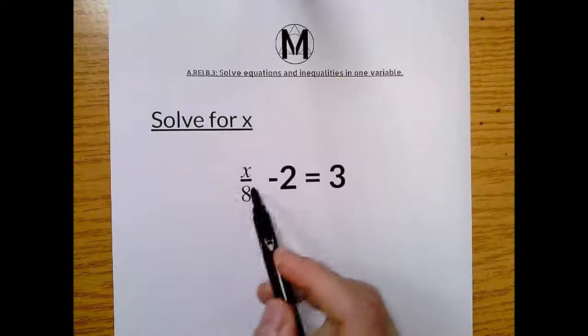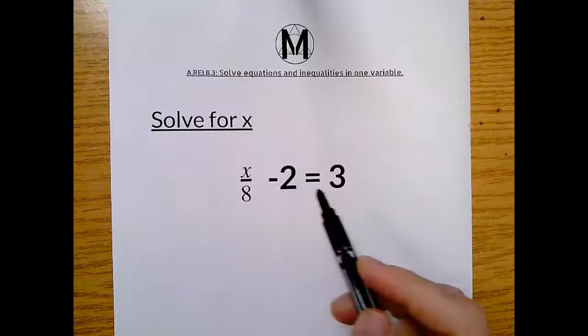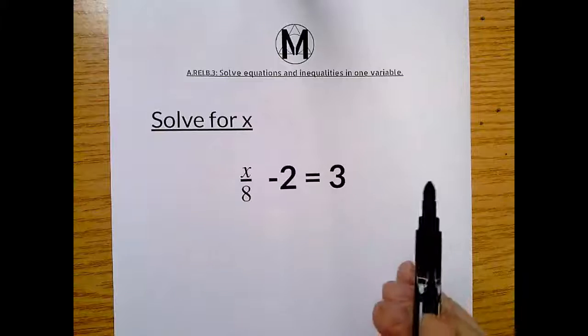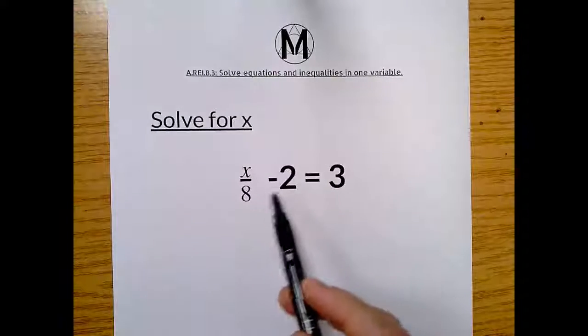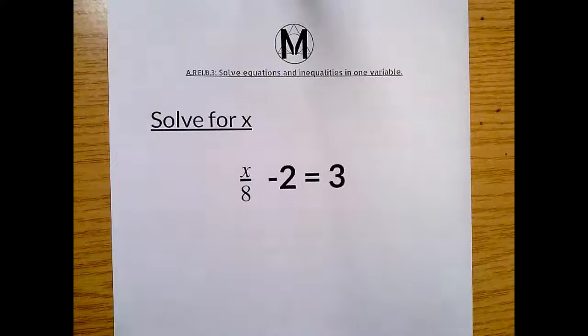So first things first, it says x divided by 8 minus 2 equals 3. All right, before we even approach this x, let's get this negative 2 to the other side.